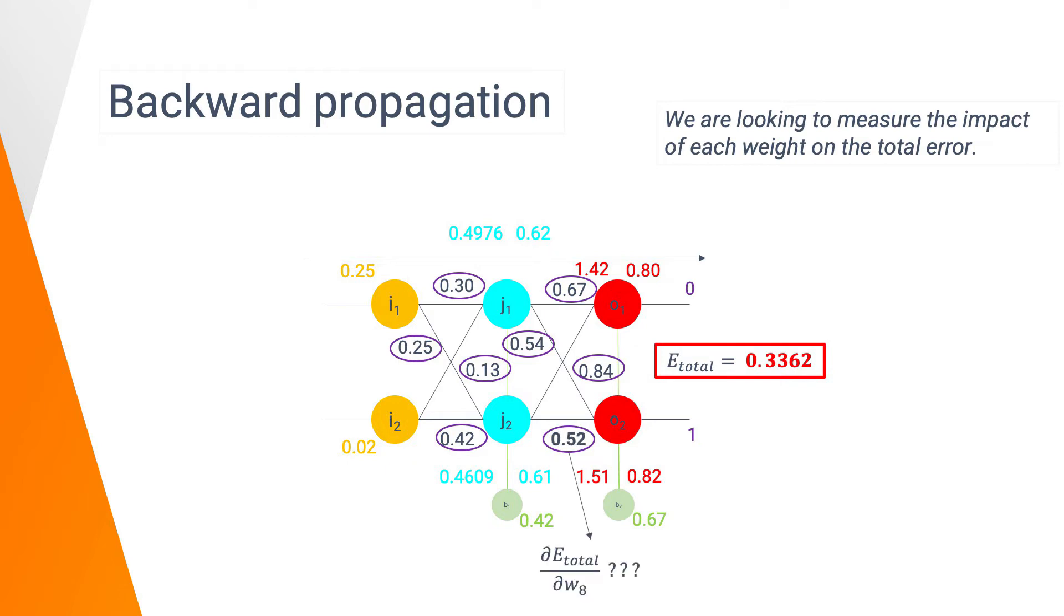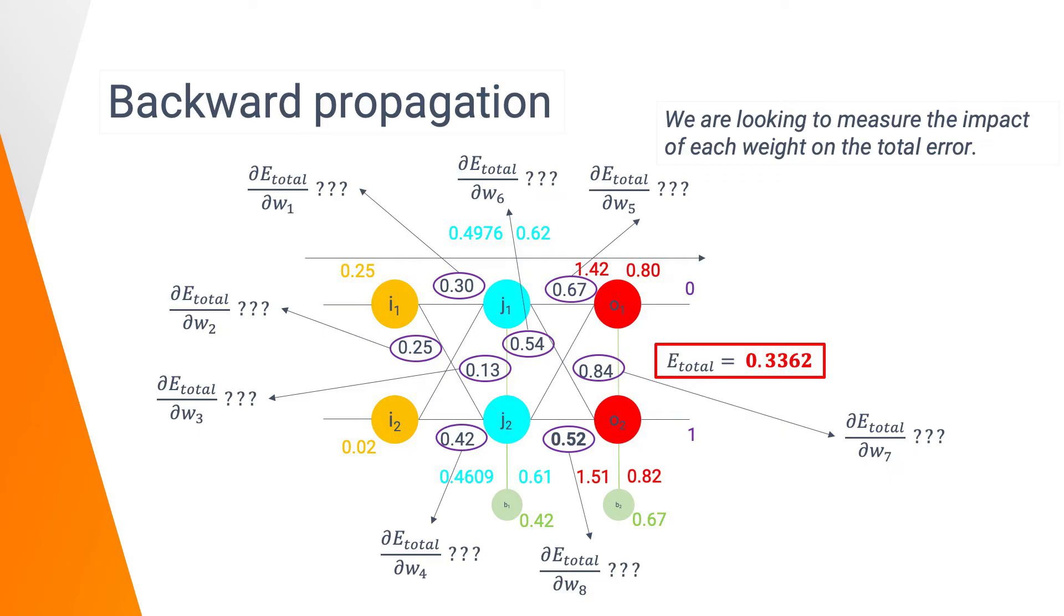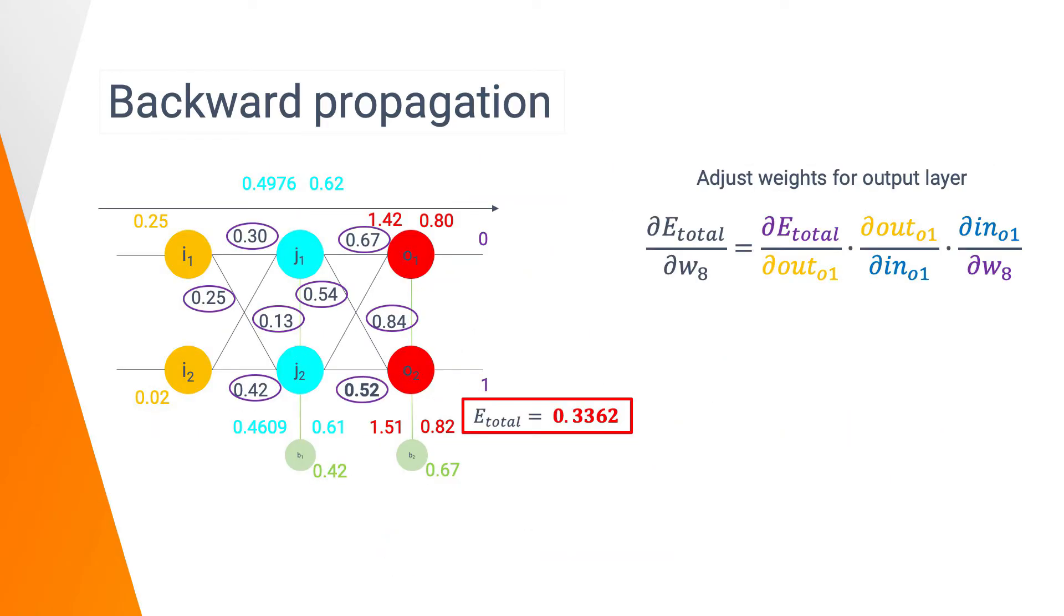We will calculate the impact of weight 8 here on the total error. It is what we call the partial derivative of E total on W8. We can also call it the gradient with respect to W8. And later, we can calculate the same for W4 and for any other weight of any other layer in our network. Let's calculate the impact of W8 on the total error by applying the chain rule. You can refer to the Wikipedia article if you need it or you can trust me. We can write this formula. Visually, it is what we do. To calculate the impact of W8 on E total, we need to go back through each step of compute that allowed us to calculate the error total during the forward propagation phase.